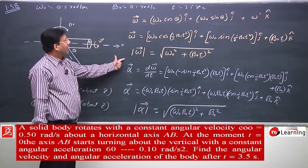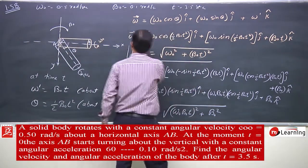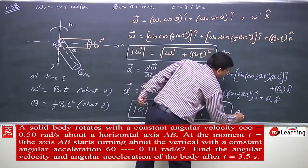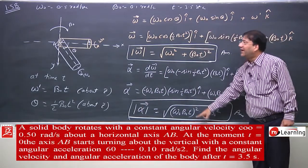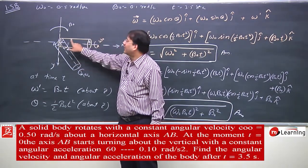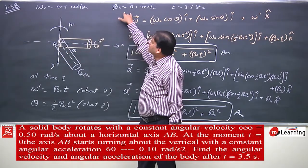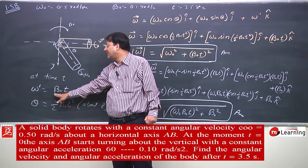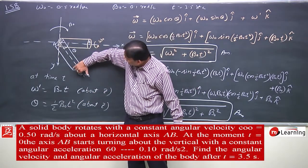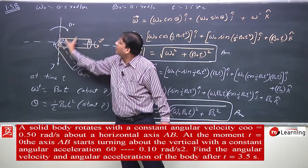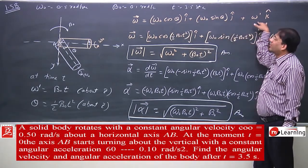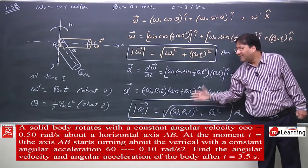This is the answer to the first part and this is the answer to the second part. Substitute the values of omega naught, beta naught and time and you would get the answer. The body is rotating with constant angular velocity omega naught about axis ab, and axis ab is rotating with angular acceleration beta naught. Jab axis rotate karegi to axis ki angular velocity hogi omega dash that is beta naught t, aur axis ka angular displacement hoga theta that is half beta naught t square. The new angular velocity has components: one along x-axis, one along y-axis, and one along z-axis (vertical). Is tarike se humne solve kiya.